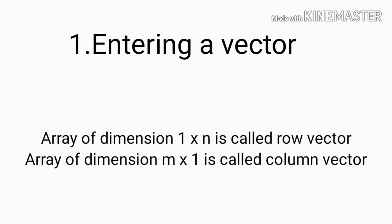A matrix is a two-dimensional array consisting of m rows and n columns. If the matrix contains only one row, that is with dimension 1 by n, it is called a row vector. If it contains only one column with the dimension m by 1, it is called a column vector. We will do an example for entering a vector in MATLAB.